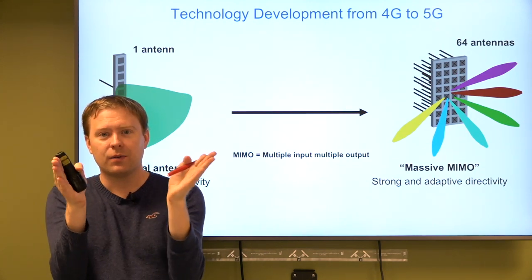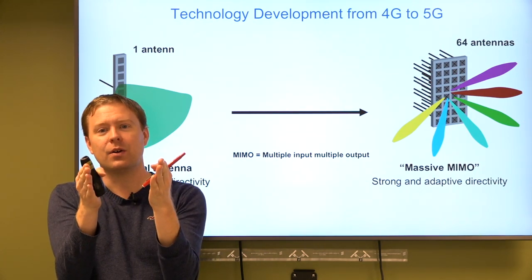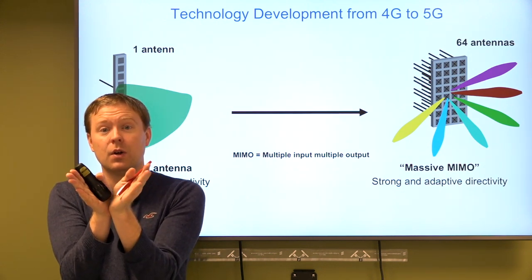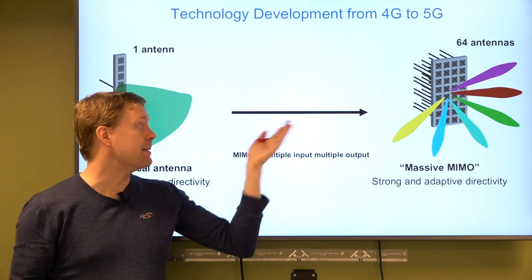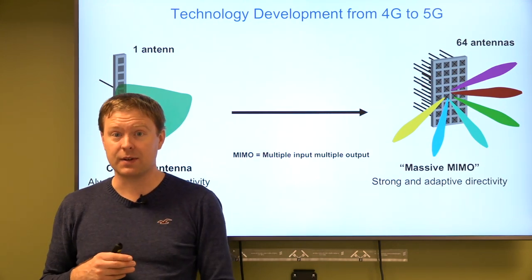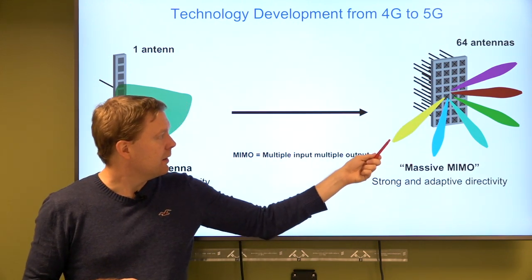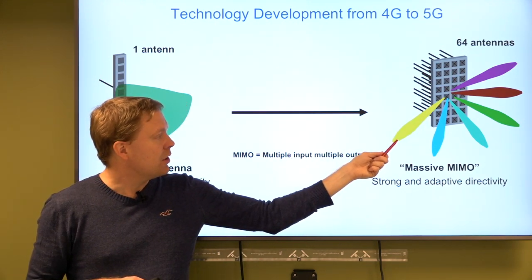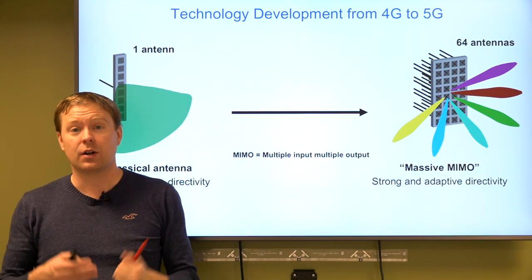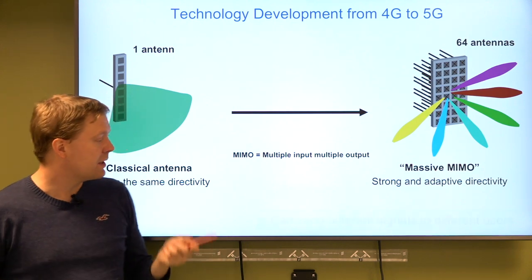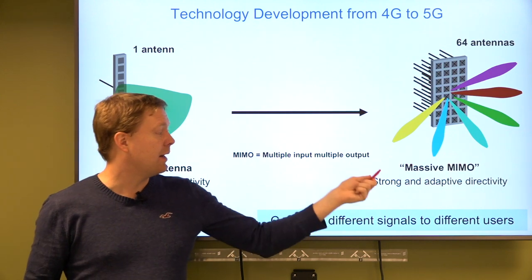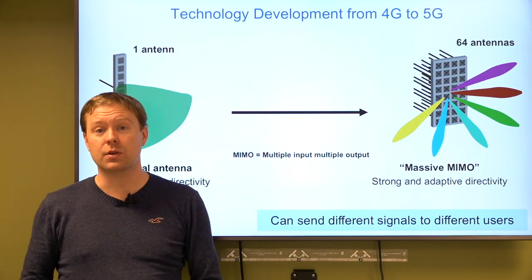Since the beams are much narrower than the 120-degree sector the antenna is supposed to cover, we need to steer them towards where the user is. That is the main feature of massive MIMO: strong and adaptive directivity. When you direct the signal toward one user, you can simultaneously send a different signal to another user in a different direction — the same time and frequency. So you get strong, user-adapted signals and spatial multiplexing.